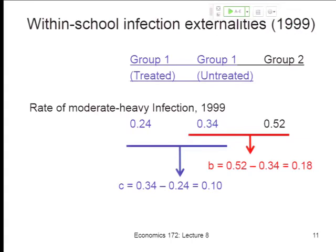So if you are treated in a treatment school, you do better than if you're untreated, but not by what we'd think of as the full effect of treatment. Studies that only randomize within schools face a problem: the control group is probably benefiting from being near the treatment group, so they look healthier than they might have otherwise, which can complicate our interpretation of treatment effects.